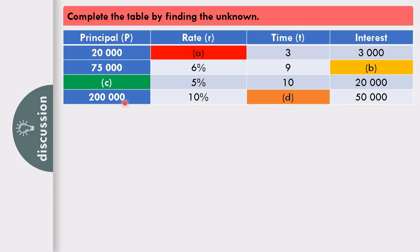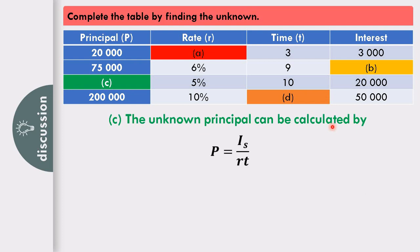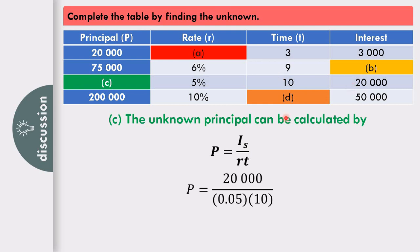In the third row, the unknown is principal. The rate is 5%, time is 10 years, and interest is 20,000. The formula is P equals I sub S over RT. Substituting: P equals 20,000 over 0.05 times 10, giving P equals P40,000.